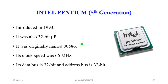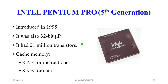The Intel Pentium is a fifth generation microprocessor, introduced in 1993. It was originally named the 80586 and is a 32-bit microprocessor with a clock speed of 66 MHz, a 32-bit data bus and 32-bit address bus. The Intel Pentium Pro, also fifth generation, introduced in 1995, is a 32-bit microprocessor with 21 million transistors and cache memory inside the processor.